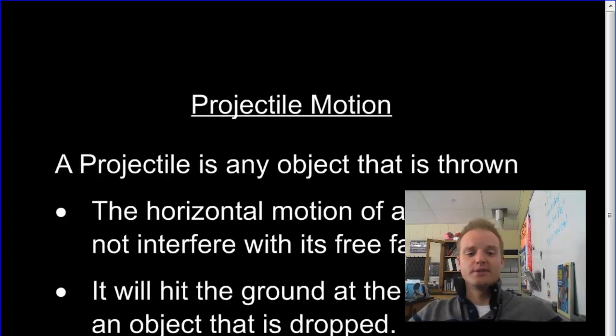Keep that in mind for in a few minutes here. And then secondly, if we drop a ball and we throw a ball, they will hit the ground at the same time because that projectile motion has inertia going forward, but there's also gravity pulling it down. Those don't interact. So the ball dropped and the ball that I throw, straight, horizontal, will land and hit the ground at the same time.